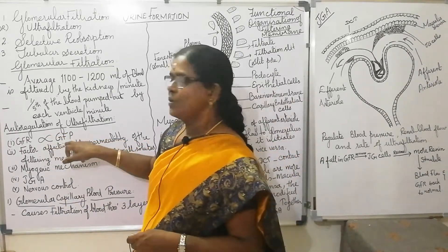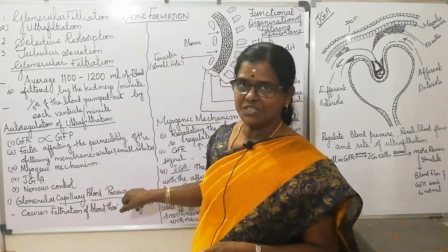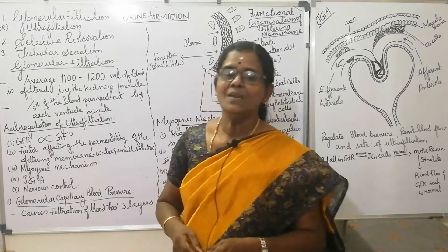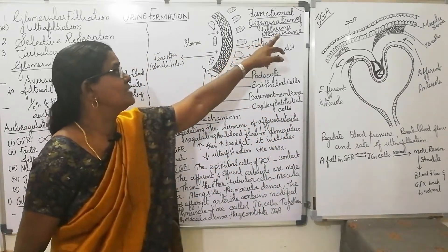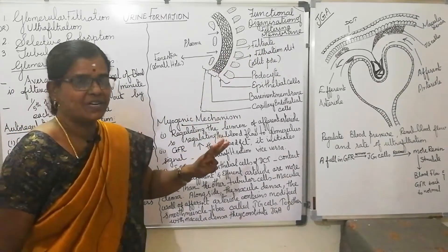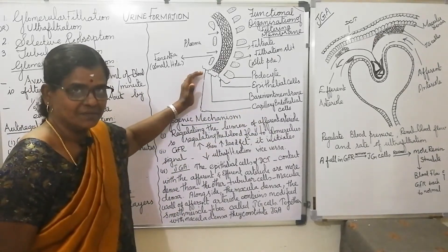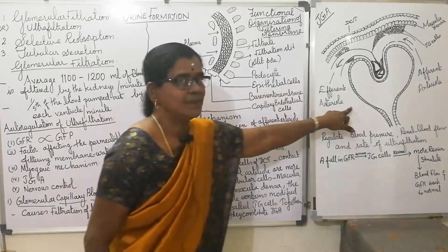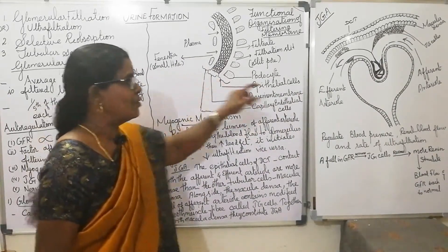Glomerular capillary blood pressure causes the filtration of blood through three different layers. This diagram shows the functional organization of the filtering membrane. The three different layers are: first, the endothelium — endothelium of the glomerular blood vessel; second, the epithelium of Bowman's capsule; and in between these two layers, the basement membrane.